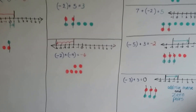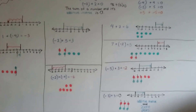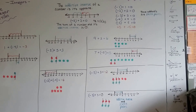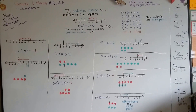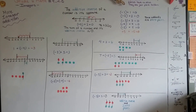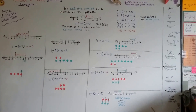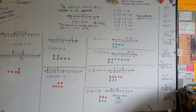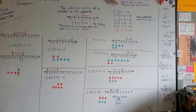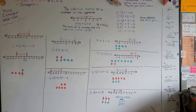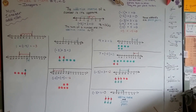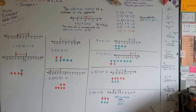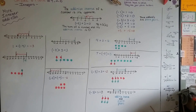Whether you use a number line, my hills and holes like we did in video 9.2, or the positive and negative chips, these will all help you add positive and negative numbers. Just remember — when you don't see a sign in front of a number, there's an invisible plus sign in front of it, meaning it's positive. In the next video we'll talk about the rules for adding integers. Keep up the good work — see you there!